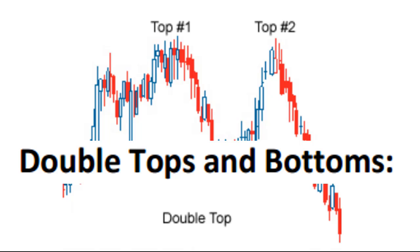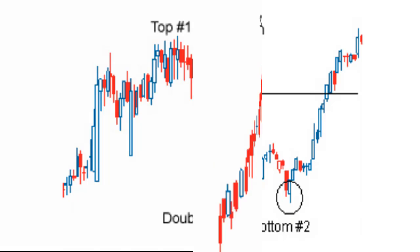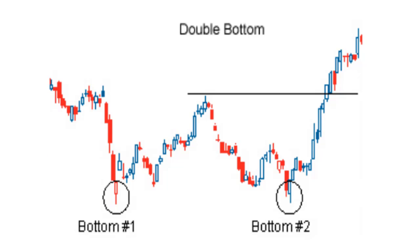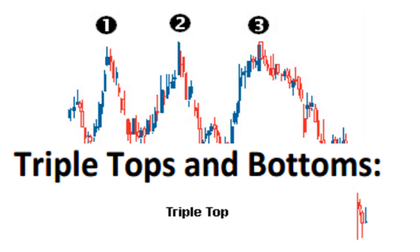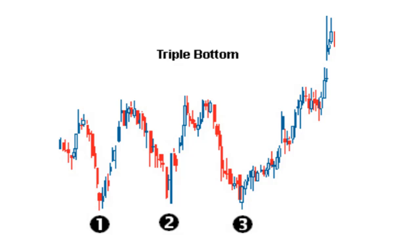Double tops and bottoms are well-known patterns that signal a trend reversal. They are considered among the most reliable patterns and are commonly used. These patterns are formed after a sustained trend and signal that the trend is about to reverse. They are created when price movement tests support or resistance levels twice and is unable to break through. Triple tops and bottoms are another set of reversal chart patterns, similar but less prevalent. They are formed when the price tests a level of support or resistance three times and is unable to break through. A trade entry is initiated at the break of a neckline, with a small stop loss, and the target is the distance between the peaks or troughs and the neckline.